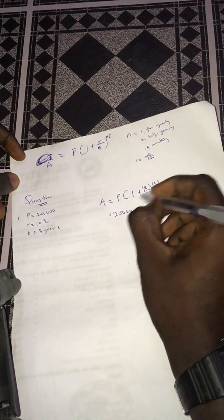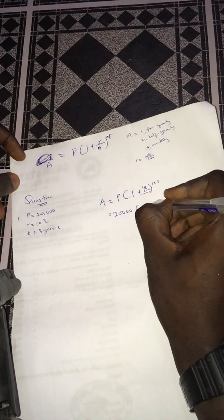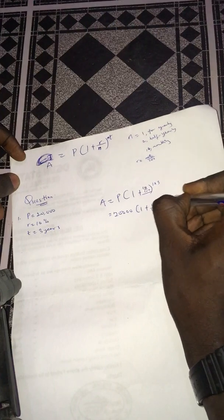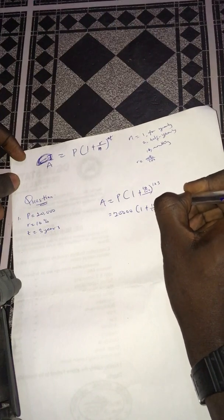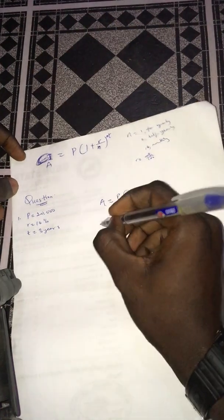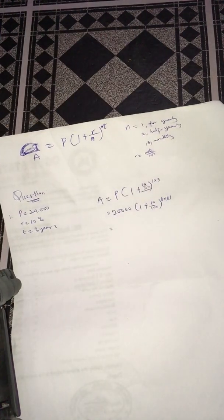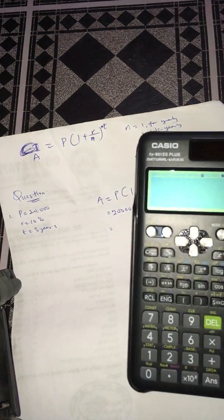So 20,000 times (1 + 10/100) raised to power 1 times 3. All you have to do manually is calculate this to get the amount. But how do you go through this process using the scientific calculator?